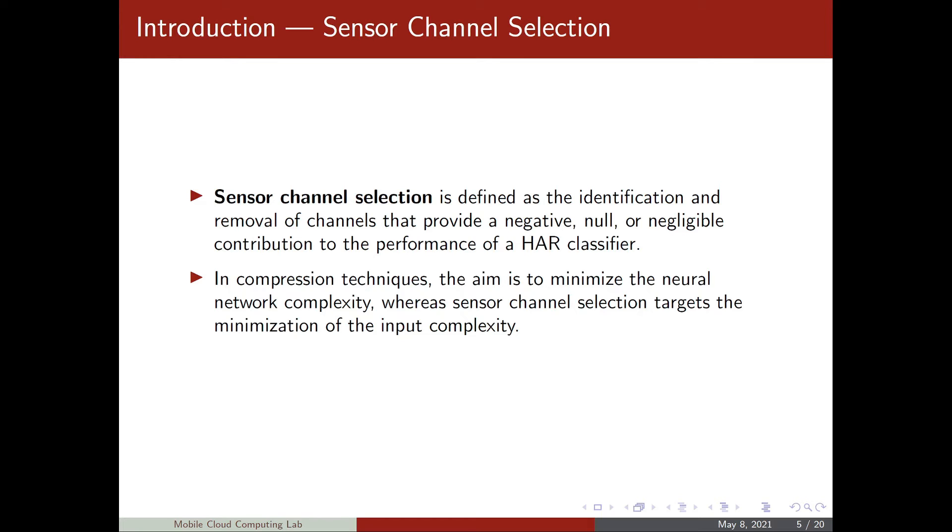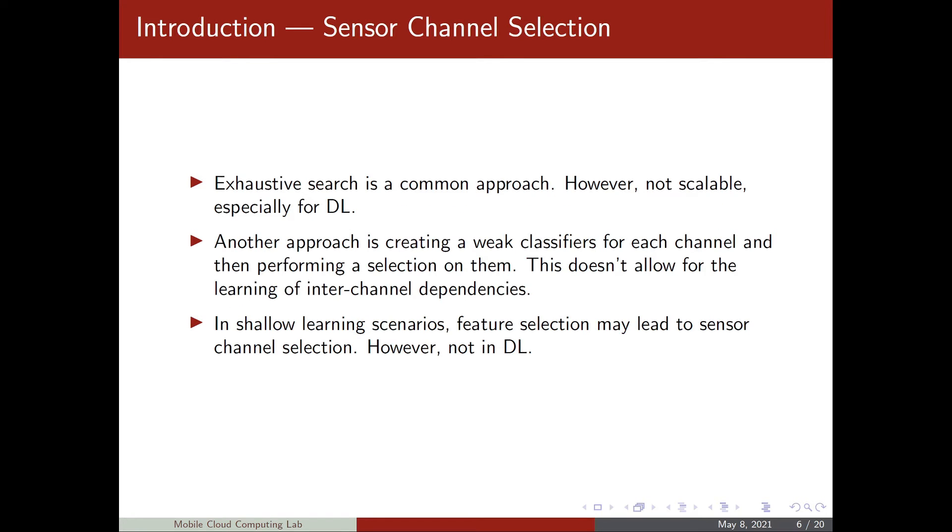The difference between sensor channel selection and compression techniques, neural network compression techniques, is that in compression techniques the aim is to minimize the neural network complexity, whereas in sensor channel selection the goal is to minimize the input complexity.